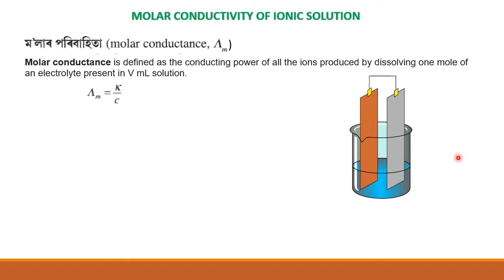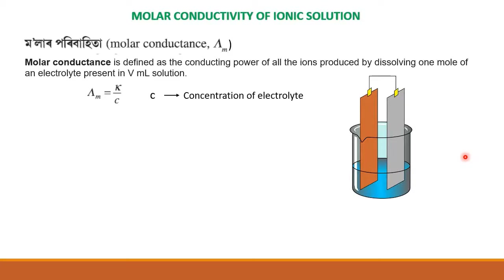So this is the conductivity kappa of C. This is the molar concentration of electrolyte. Generally, we use molar concentration of electrolyte in the formula.